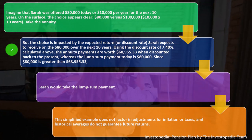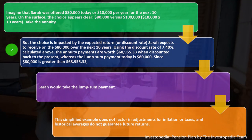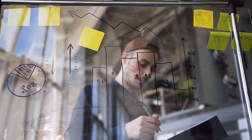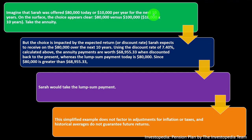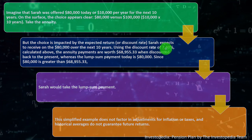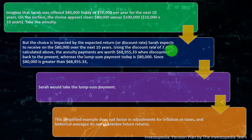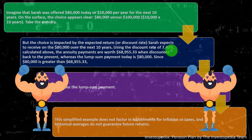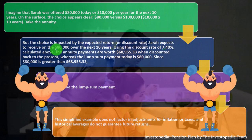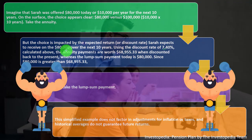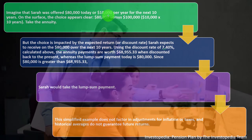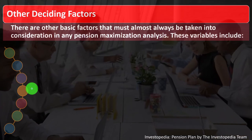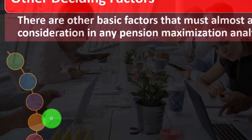This example doesn't factor in inflation adjustments, taxes, or the fact that historical averages don't guarantee future returns. The 10-year assumption for life expectancy is a simplification — in reality payments may last a lifetime. The discount rate assumption based on prior returns and the tax implications (recording $80,000 in year one may push you into a higher bracket versus $10,000 per year) are all relevant factors to consider.